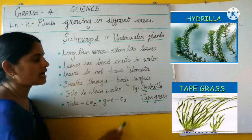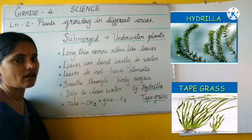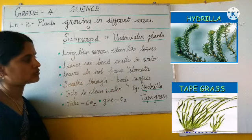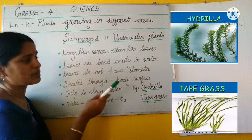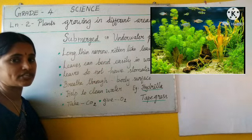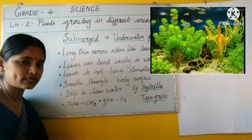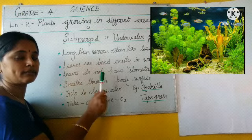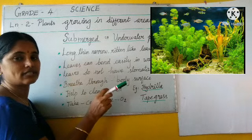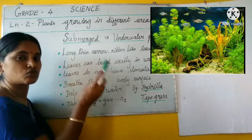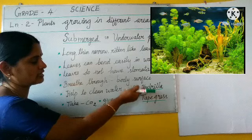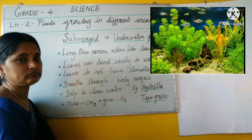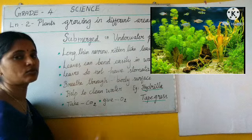Examples of submerged plants are hydrilla and tape grass — by the name itself you know the leaves are grass-like. These are the plants they keep in an aquarium or fish tank. Only submerged plants are kept in the aquarium because the oxygen needed for the fishes is given out by hydrilla or tape grass.